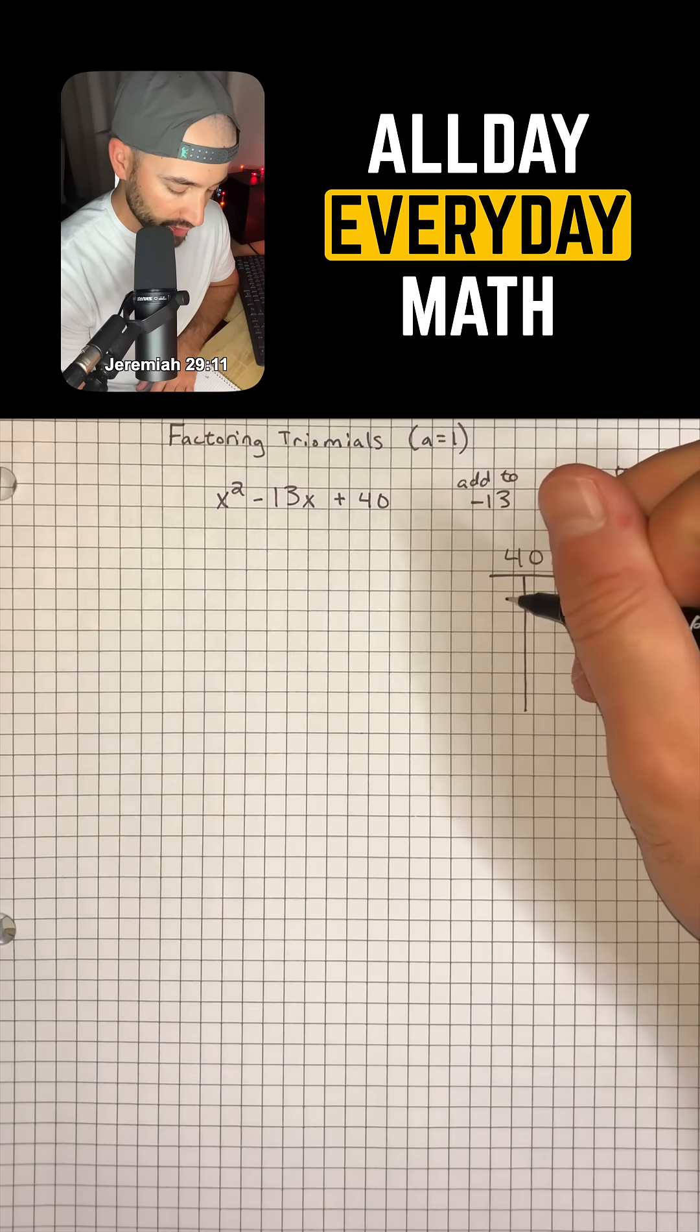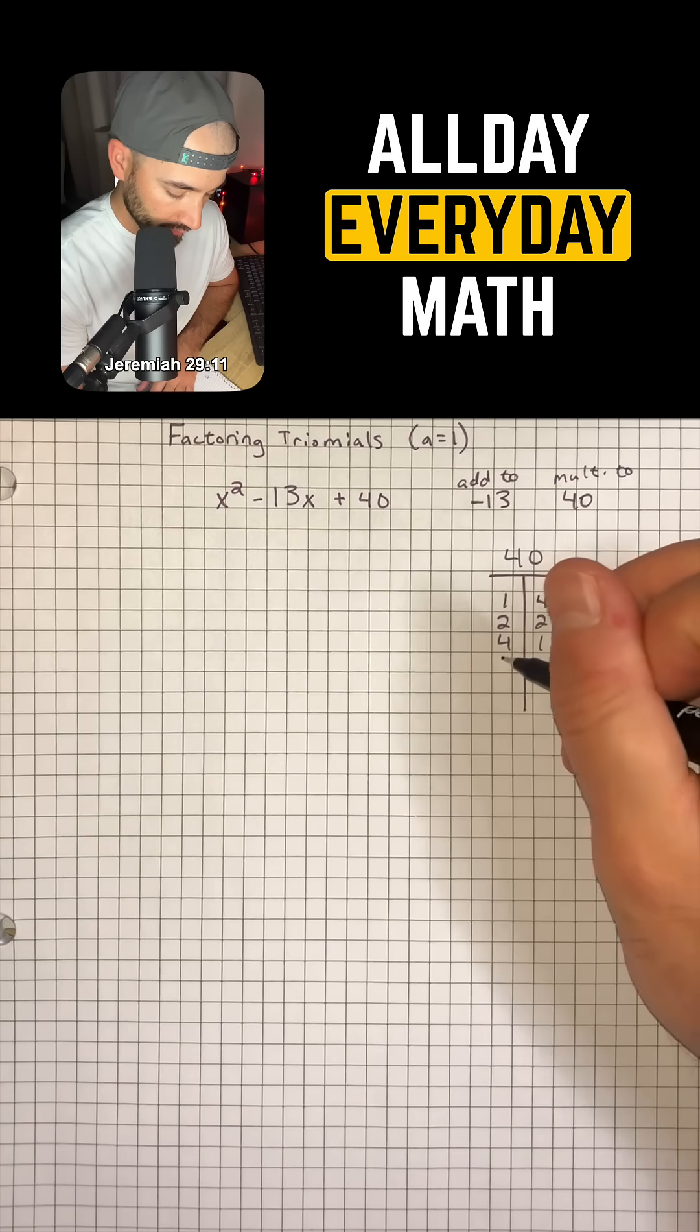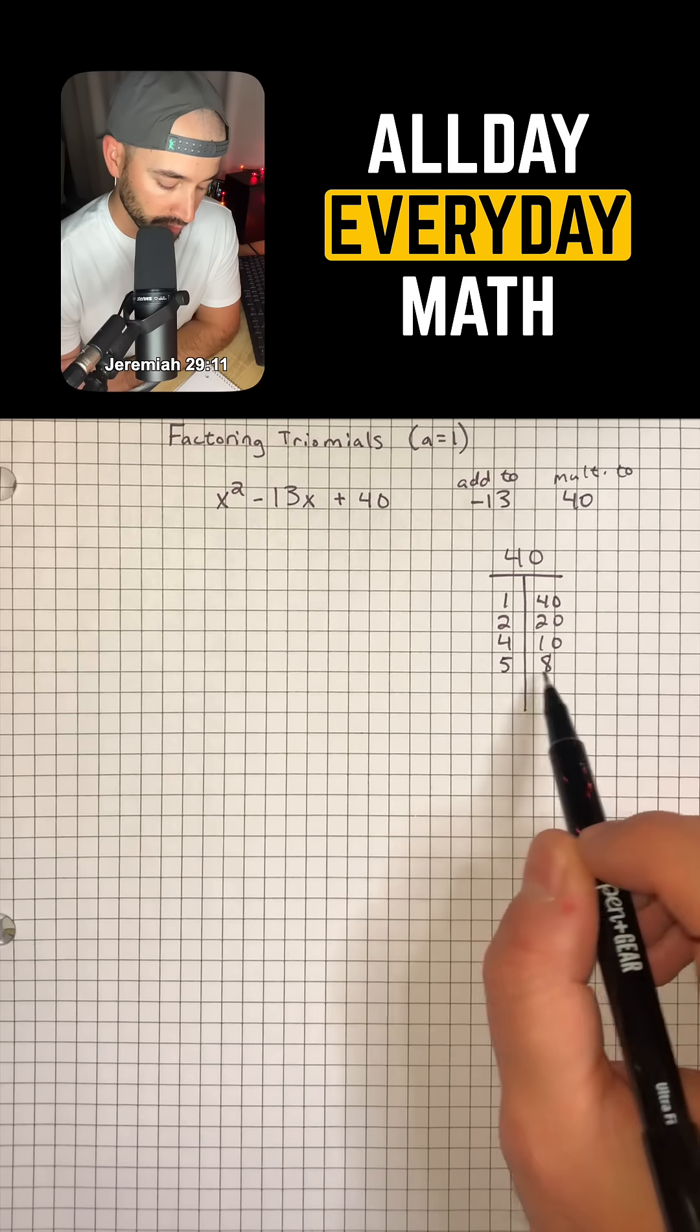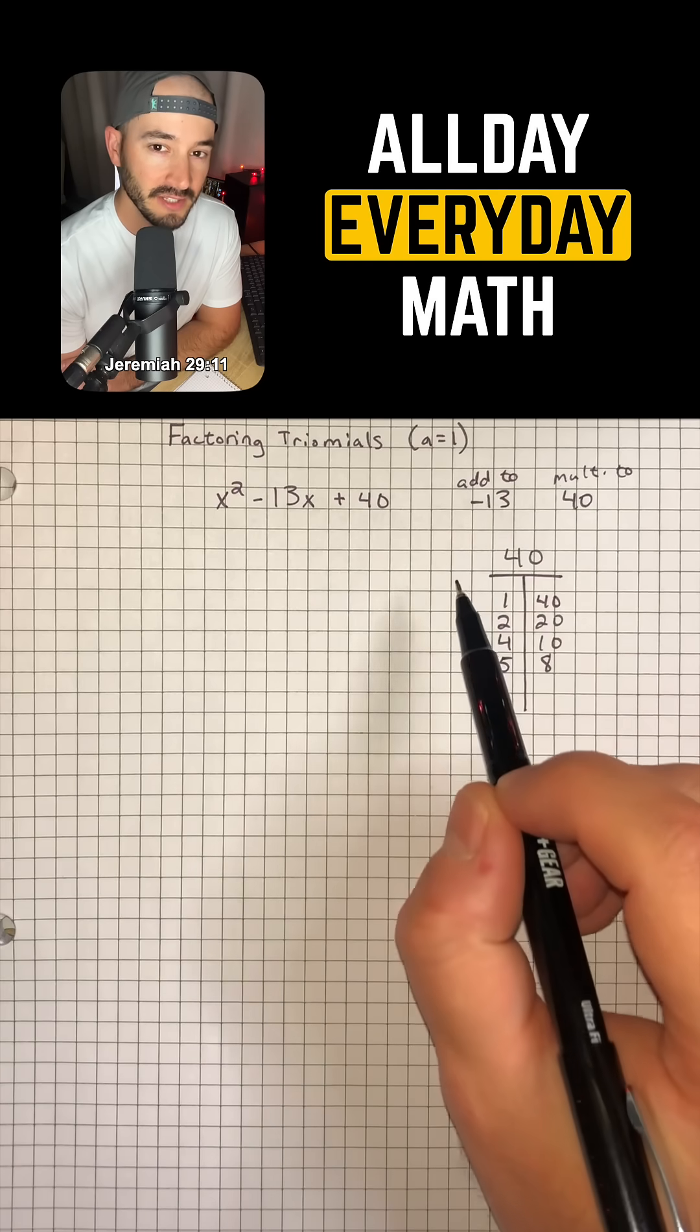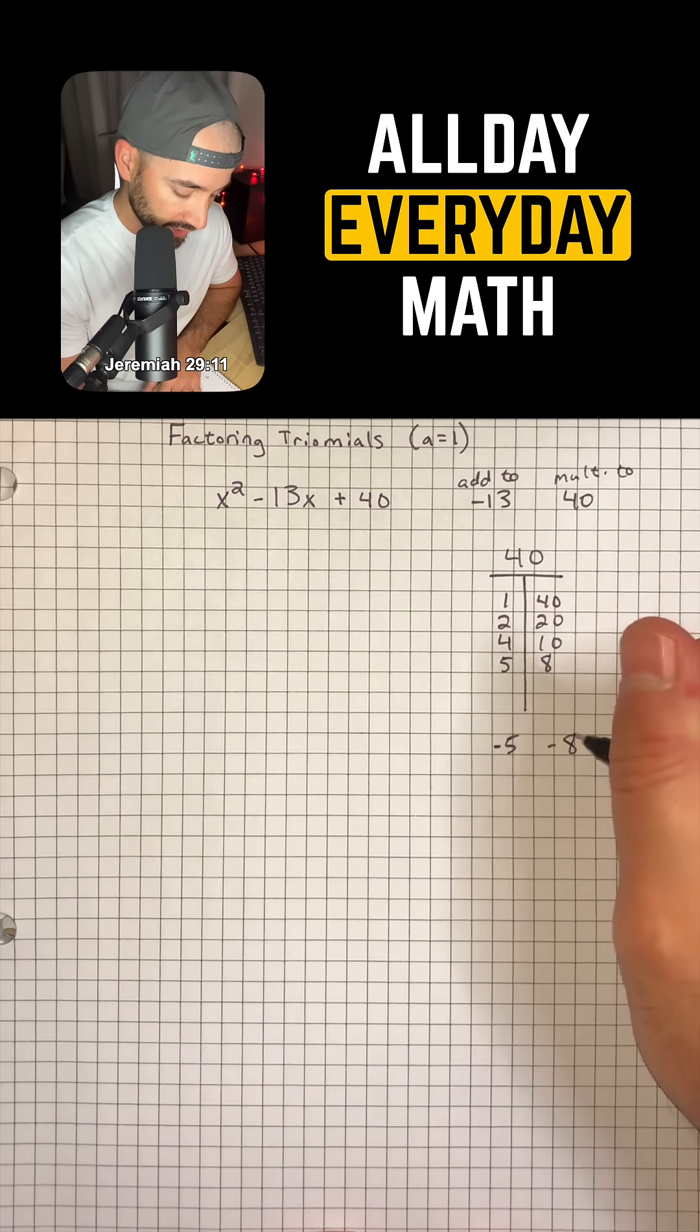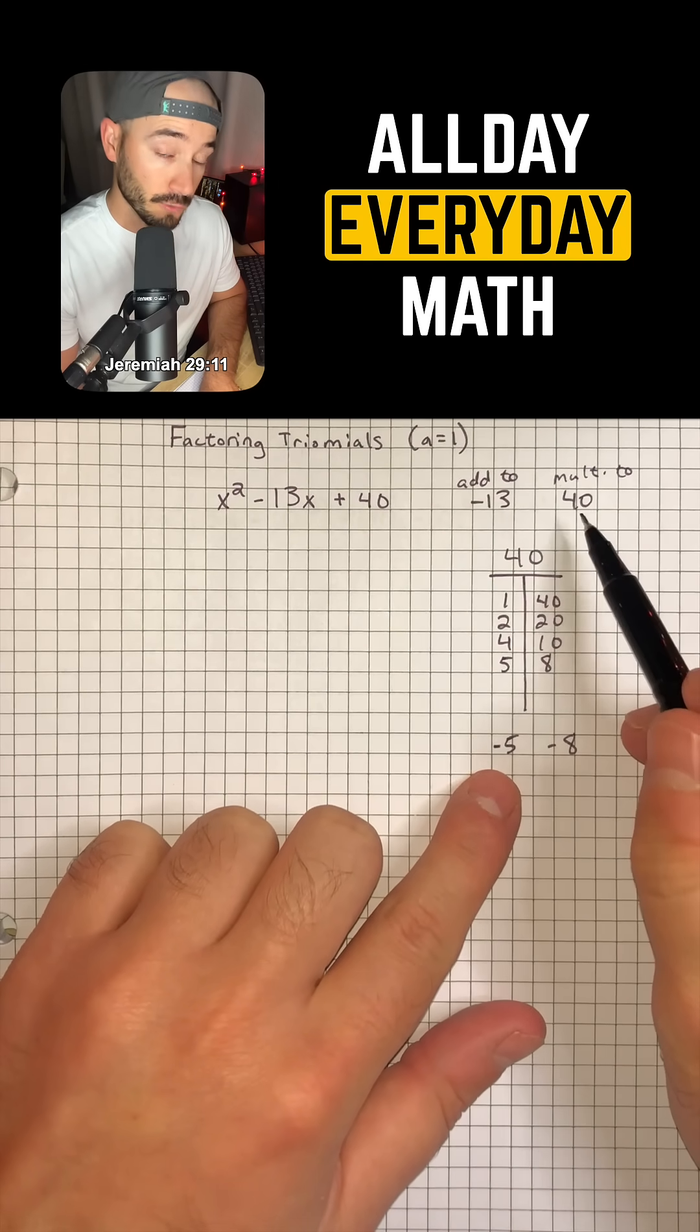So obviously we'll have 1 and 40, 2 and 20, 4 and 10, 5 and 8. I see that we have two factors that we can use of 5 and 8. Well notice that 5 and 8 add up to 13 but we need them to add up to negative 13. So what that means is that we're going to have a negative 5 and a negative 8, that way they add to negative 13 but they multiply to positive 40.